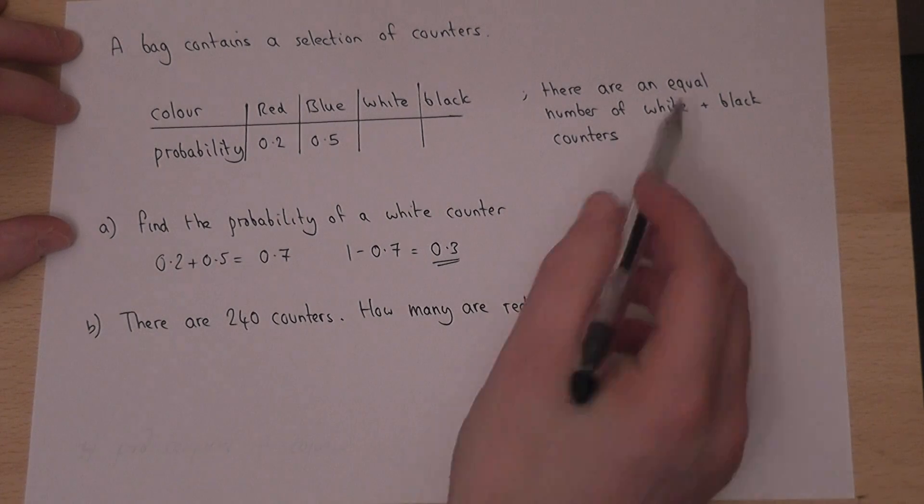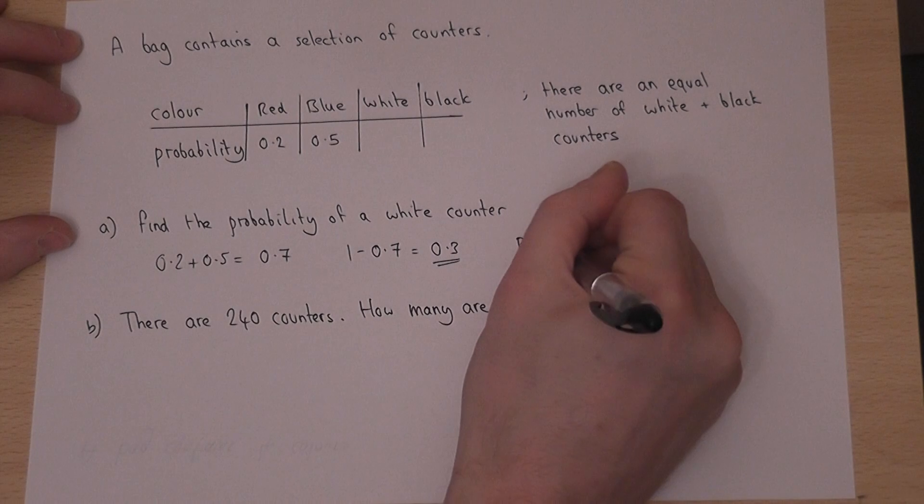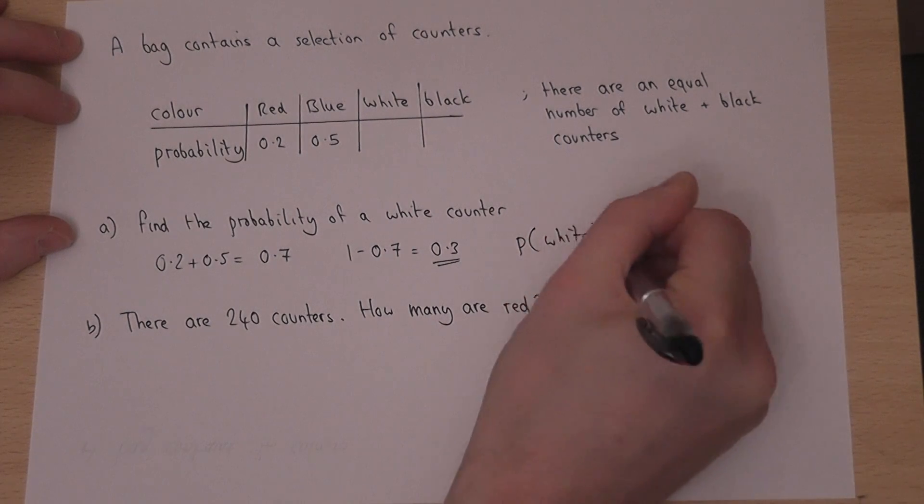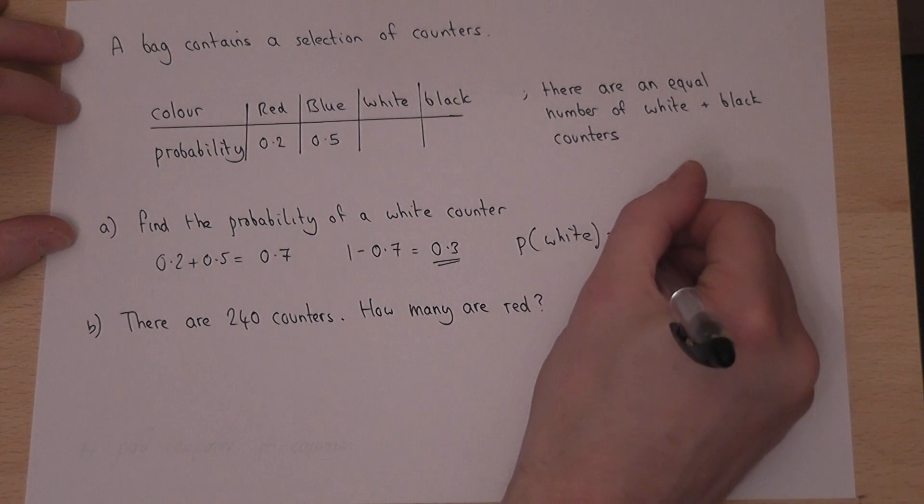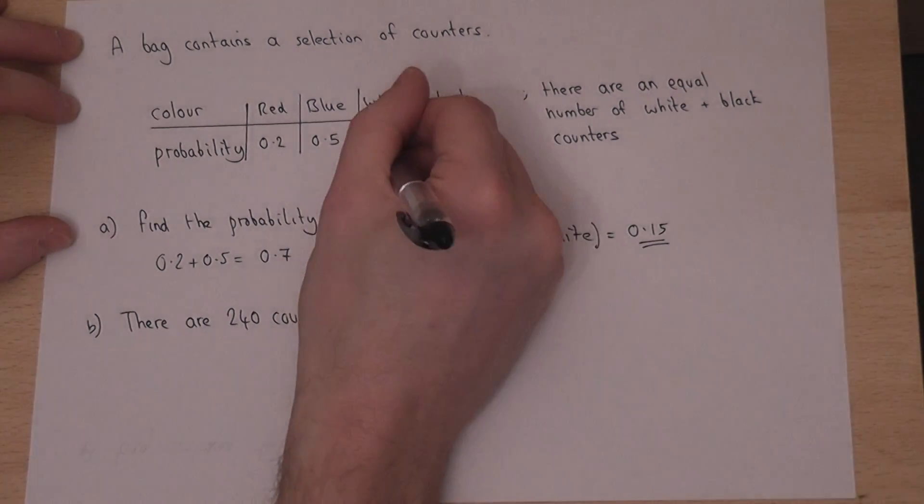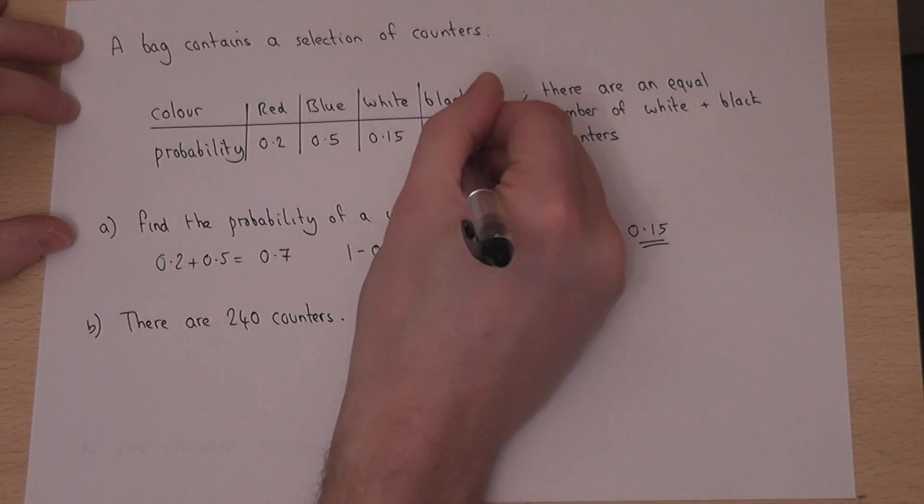But because we're told there's an equal number of white and black counters, then the chance of a white counter must be half of 0.3, which is 0.15. So the white is 0.15 and the black is also 0.15.